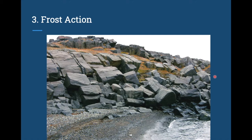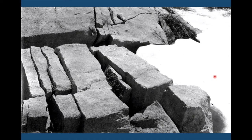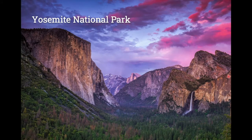We can see frost action in areas with what's called joint block separation, where water coming down and getting into the rock splits it into these geometric blocks — it's almost industrial-looking and remarkable in how geometric it can be. This is important for California because we have a lot of granite stuck up pretty high in elevation. A great example of this is Yosemite National Park.